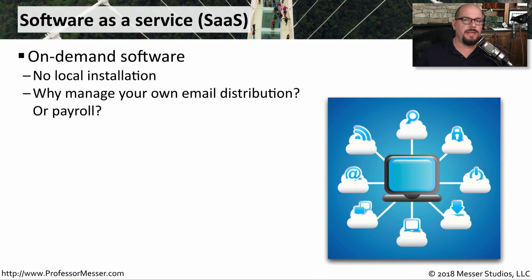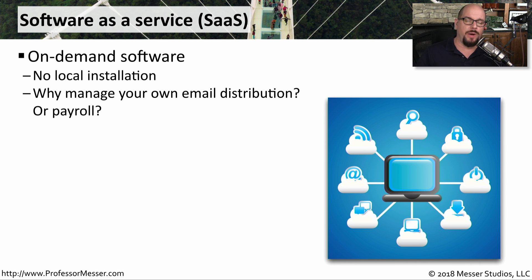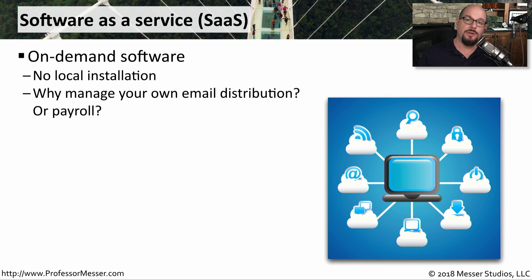At this point, many of us have taken advantage of software as a service, or SaaS. This is on-demand software. So if you didn't want to run your own mail server, you could effectively outsource that functionality to a third party that provided you with software as a service. Many organizations also do this for payroll, so you don't have to have your own server running your own payroll software — you simply use a third party to do the payroll using their software as a service.